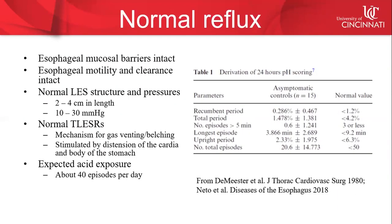There is an expected amount of gastroesophageal reflux that occurs in normal individuals. For this to not be pathological, the esophageal mucosal barriers need to be intact, motility and clearance mechanisms including saliva production need to be intact, and the lower esophageal sphincter needs normal structure and pressures — two to four centimeters in length and about 10 to 30 mmHg of resting pressure. Normal transient lower esophageal sphincter relaxations, or TLESRs, are the mechanism for gas venting and belching. They are stimulated by distension of the cardia and body of the stomach. The expected acid exposure of the distal esophagus is about 40 episodes per day, with the DeMeester normal values shown.